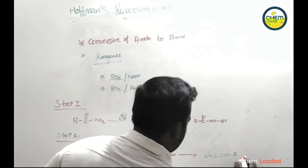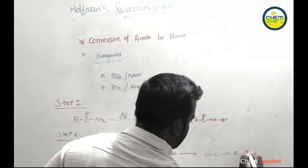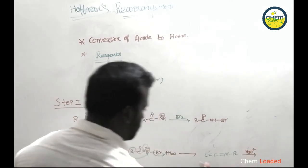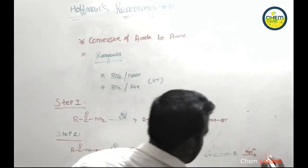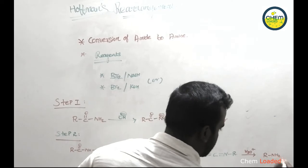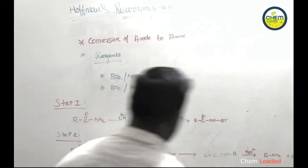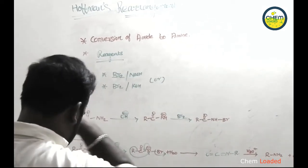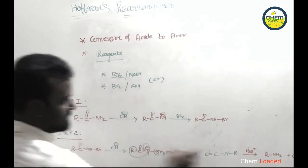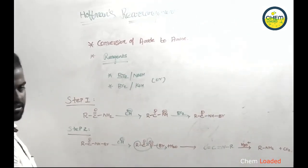Now we will react through rearrangement. With H3O+, R and NH2, CO2 is lost. This is the primary amide reacting to form an amine — this is Hofmann rearrangement.